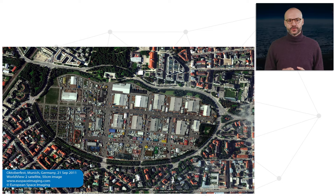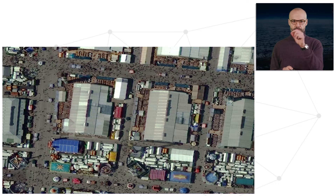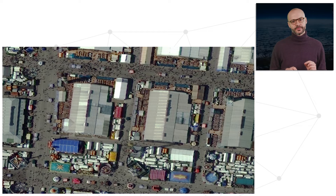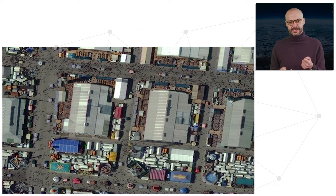Another use of high-resolution data is to map crowds. This example is over Munich at Oktoberfest. Zooming into the image, it's actually possible to see individual persons. This is particularly relevant in events like this one where large numbers of people attend. What is nice here is to appreciate the detail and spatial resolution of the image.